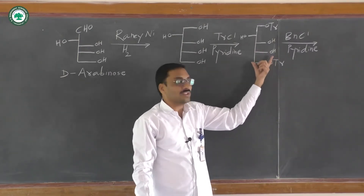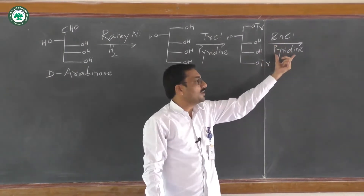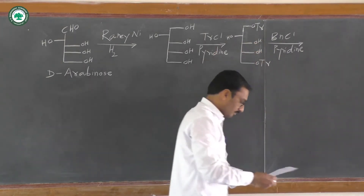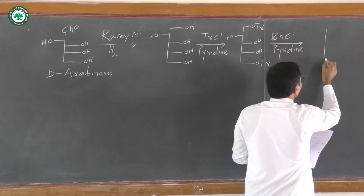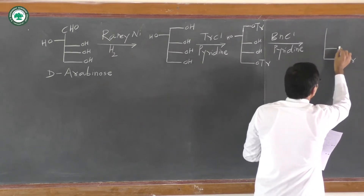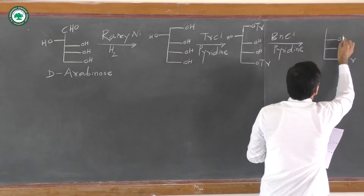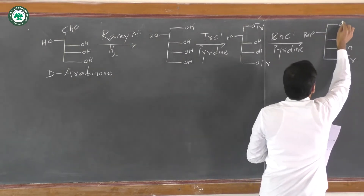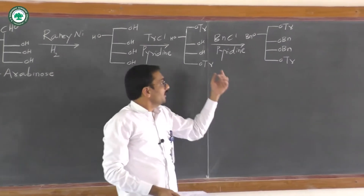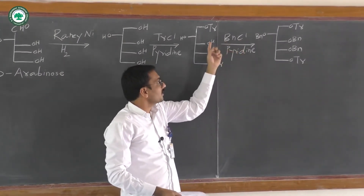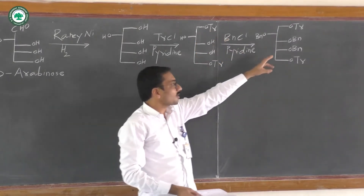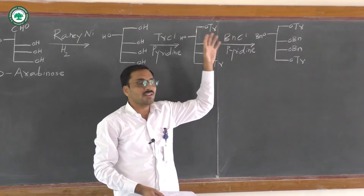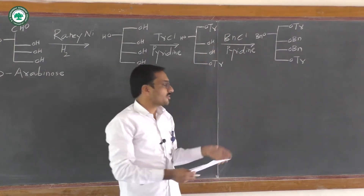In the next step, this compound is allowed to react with benzyl chloride in the presence of pyridine. Benzyl chloride acts as a protective group for the OH groups. In the presence of benzyl chloride and pyridine, the remaining three OH groups undergo protection, resulting in the formation of OBn groups. Remember, protecting groups in organic synthesis are very selective.